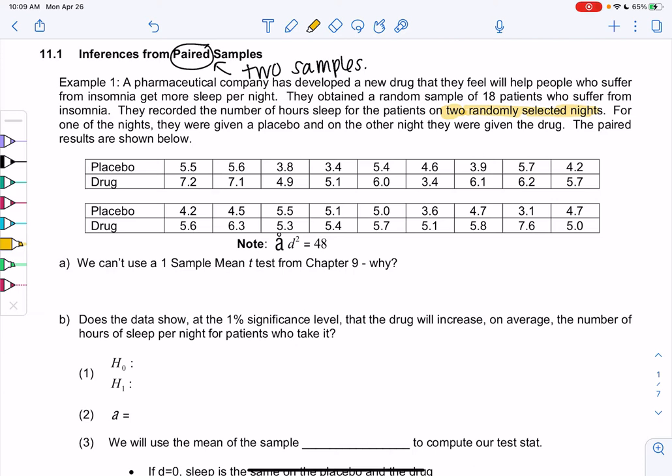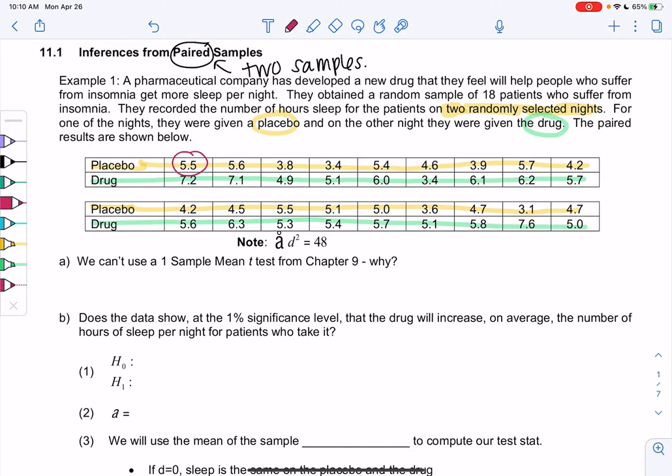For one of the nights they're given a placebo, and we record how long they slept. The second sample, they were given the drug and we record the hours of sleep. We can see most of the people slept a little longer. The first person slept 5.5 with the placebo, 7.2 with the drug. The second was 5.6 with the placebo, 7.1 with the drug. There are a few exceptions. One person slept 4.6 and then only 3.4 with the drug. They're not all sleeping longer but it definitely looks like most of them are.